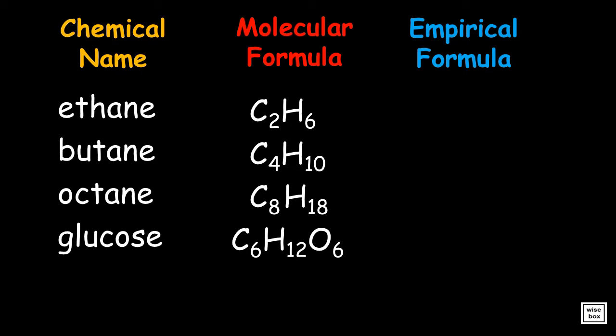Here are the corresponding empirical formulas which were derived from given molecular formulas of compounds. For ethane, the two carbons to six hydrogen ratio became one carbon to three hydrogen ratio. For butane, the ratio of four to ten was simplified to two is to five ratio.